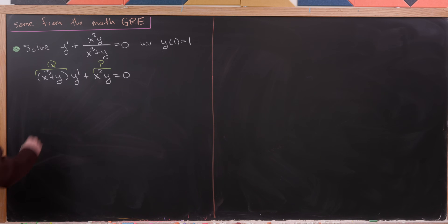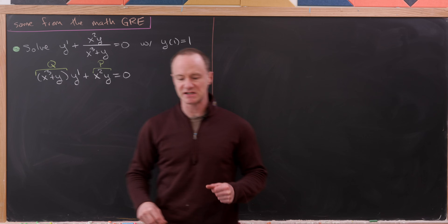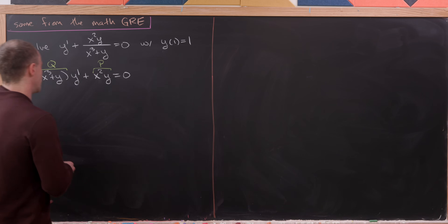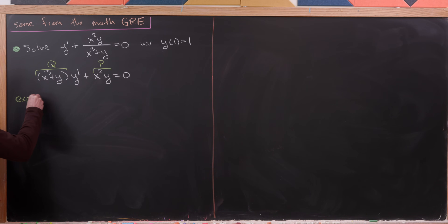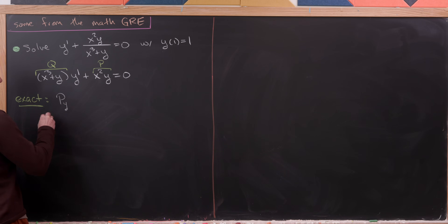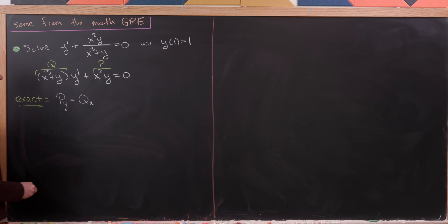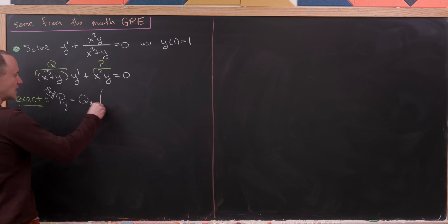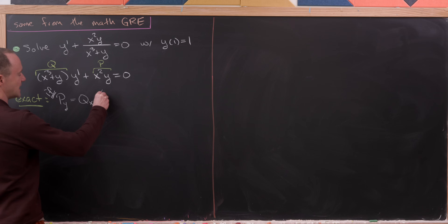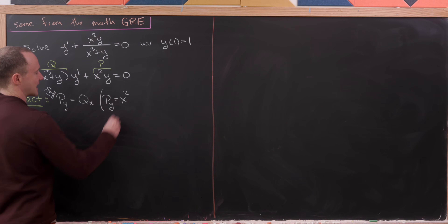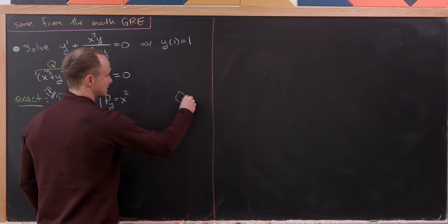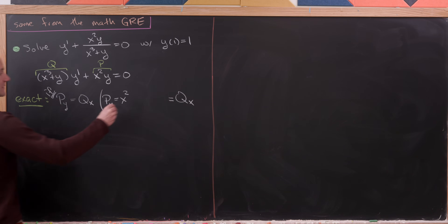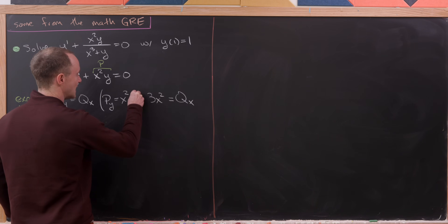Recall that this is exact if ∂P/∂y = ∂Q/∂x. Let's check: the partial of P with respect to y is simply x², but the partial of Q with respect to x is 3x². These are not equal, so this is not an exact differential equation.